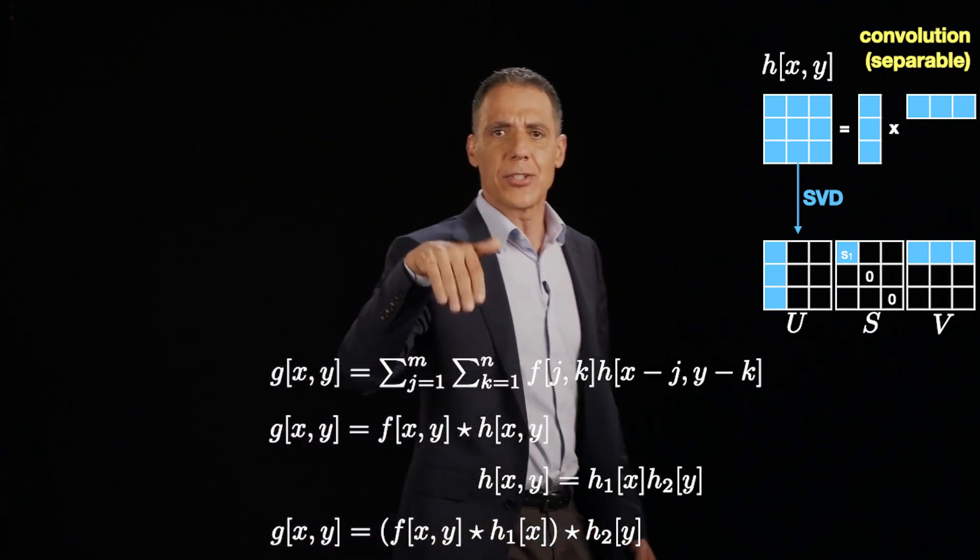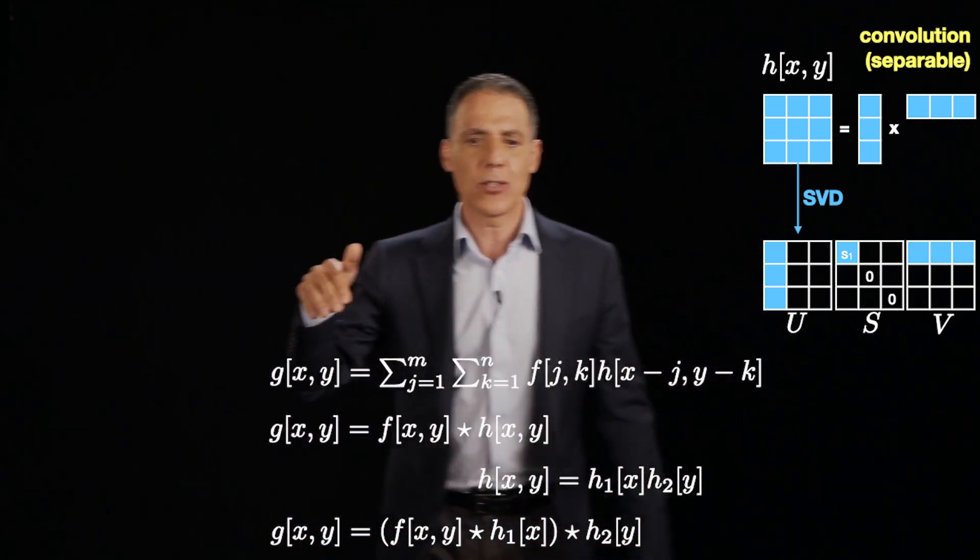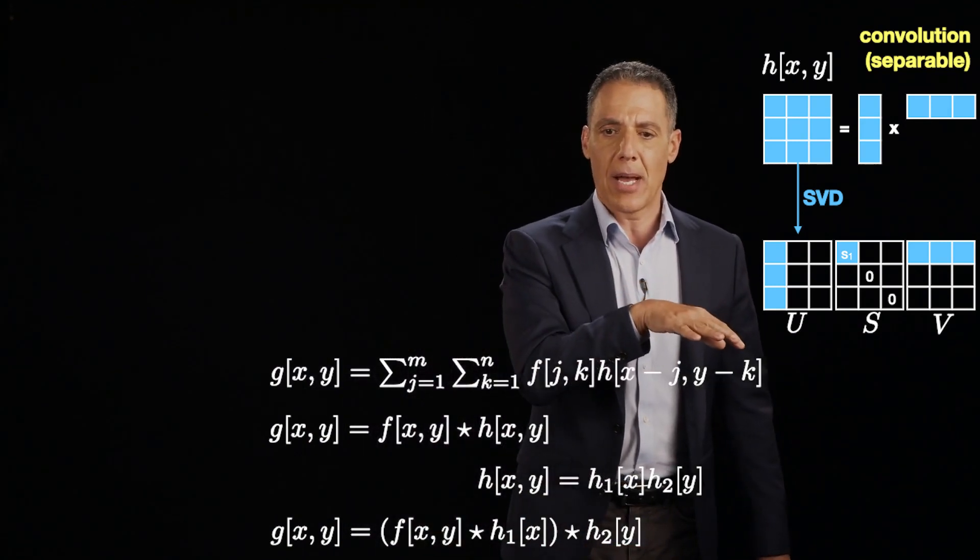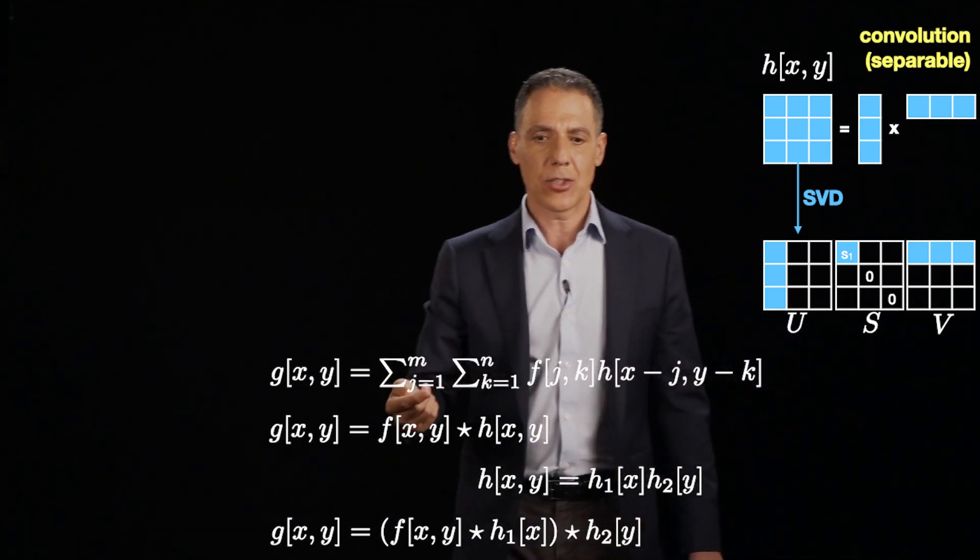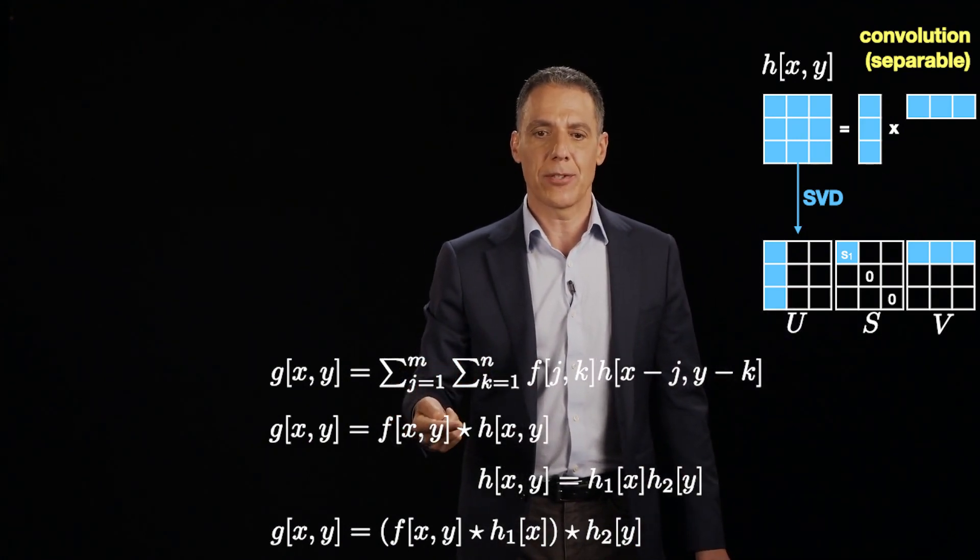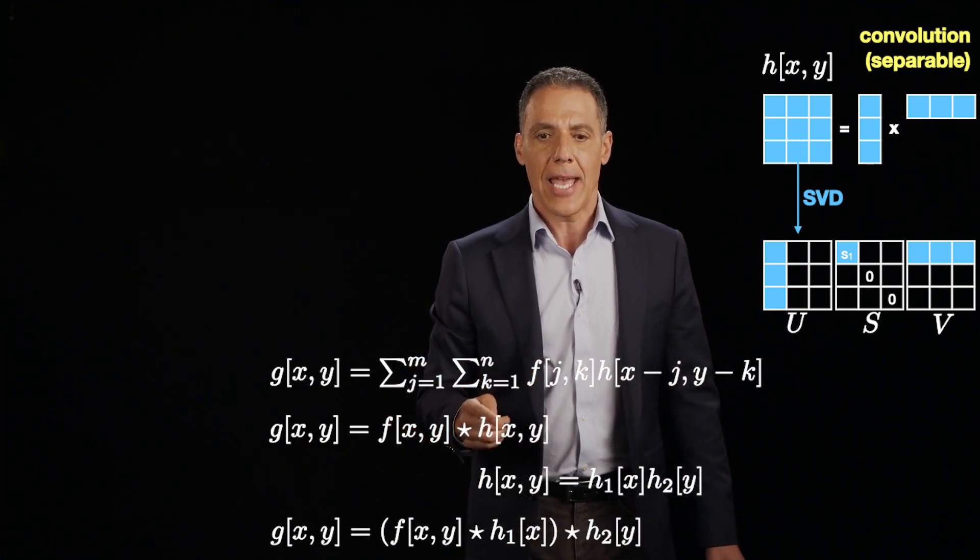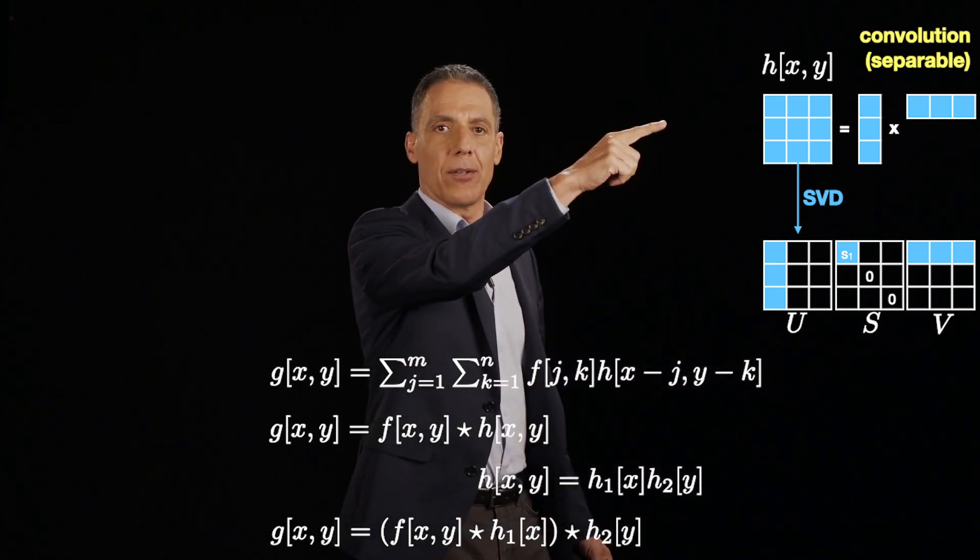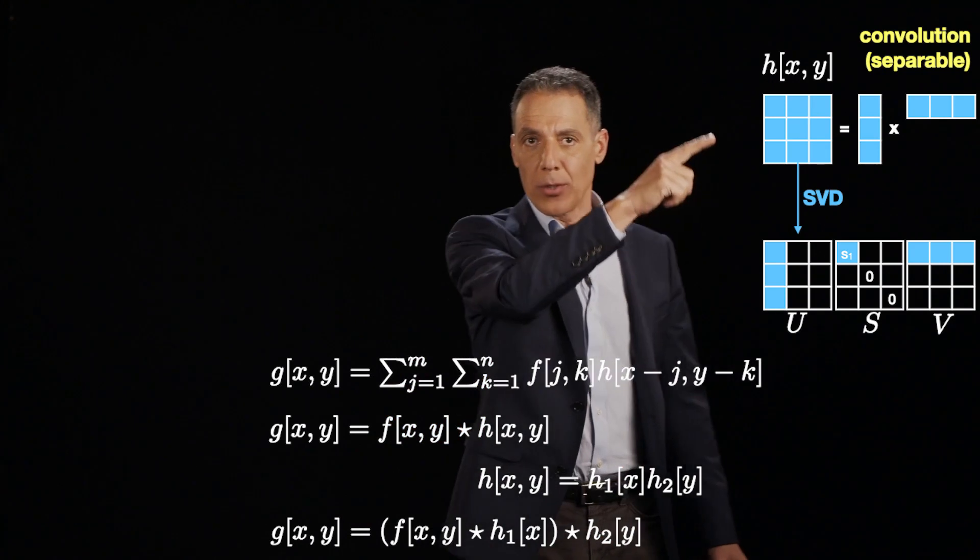Alright. So here's the convolution sum again. G of X, Y is equal to the sum. I've got my image over here and my unit impulse response that is shifting. And now let's just write it in terms of the convolution operator. There's the star operator again. And now there's my 2D kernel response. That's that guy right there.